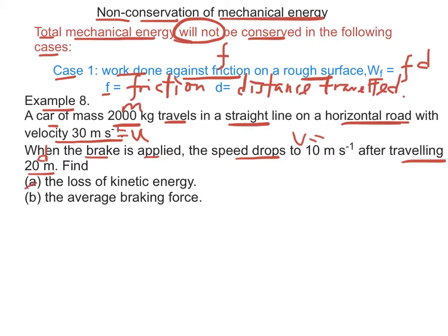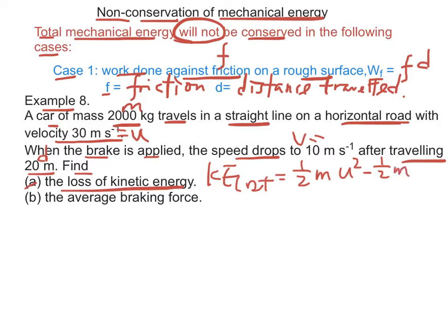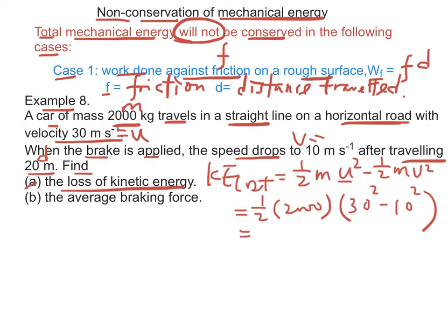Part A: find the loss of kinetic energy. Part B: the loss of kinetic energy is equal to ½mv² minus ½mu², which is ½ times 2,000 times (30² minus 10²), which is equal to 8 times 10 to the power 5 joules.